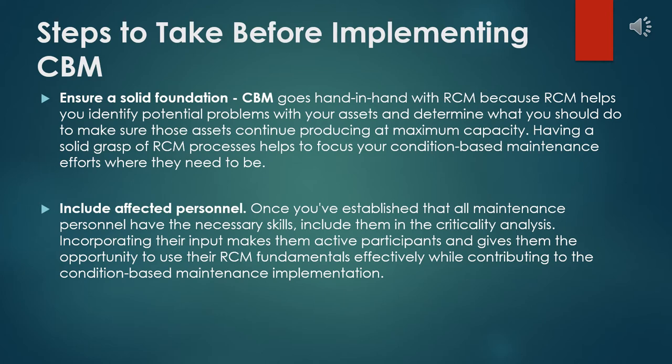Here are a few steps to take into account before implementing CBM. There are altogether four steps involved in this implementation. First, ensure a solid foundation. CBM goes hand in hand with RCM because RCM helps you identify potential problems with your assets and determine what you should do to make sure those assets continue producing at maximum capacity. Having a solid grasp of RCM processes helps focus your condition-based maintenance efforts where they need to be.